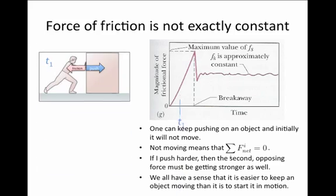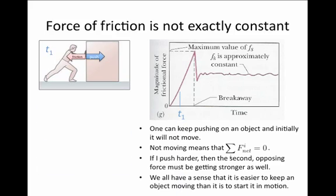If I were to draw a free body diagram of pushing a heavy crate, then at some time T1, when we're still trying to get the object moving, we might be pushing forward with some modest force, but the force of friction is pushing back on the crate with an equal and opposite force. The forces are balanced and nothing is changing in terms of speed.